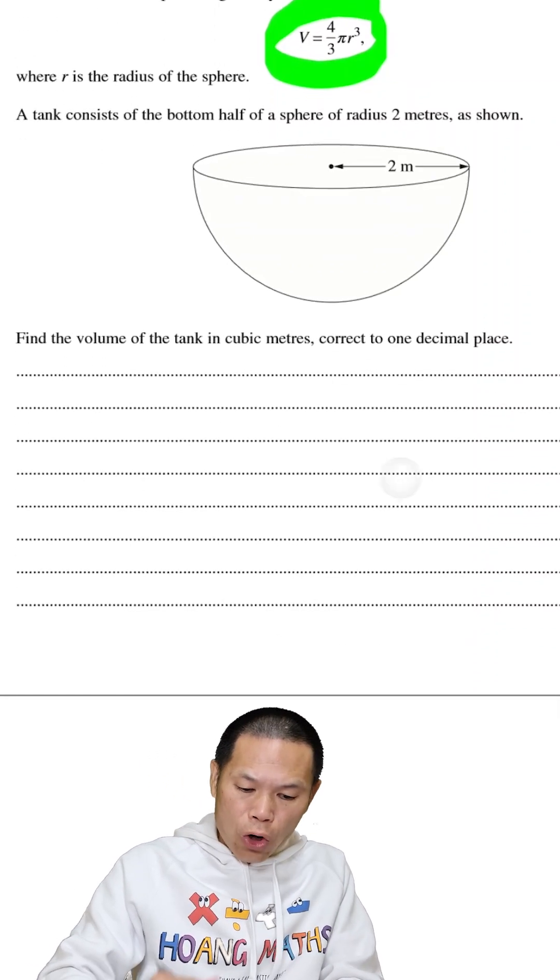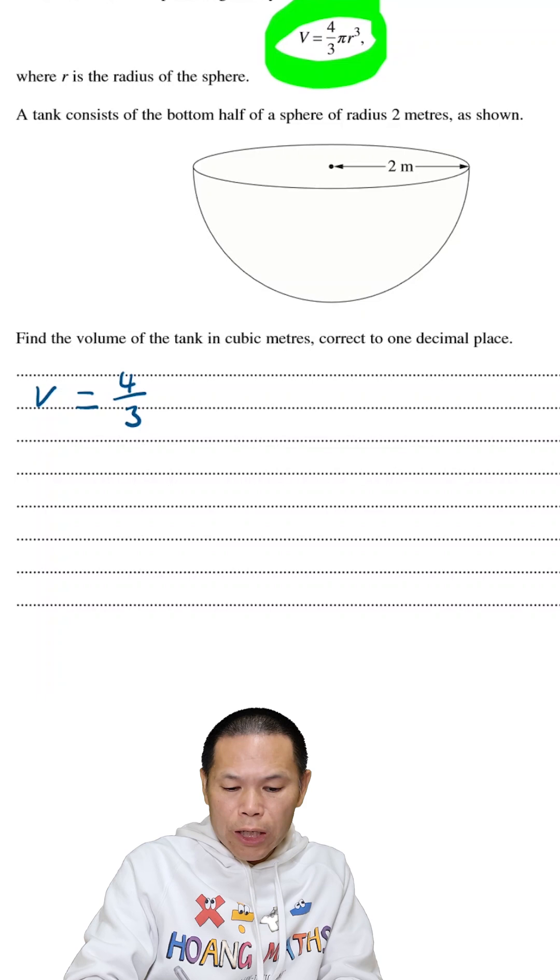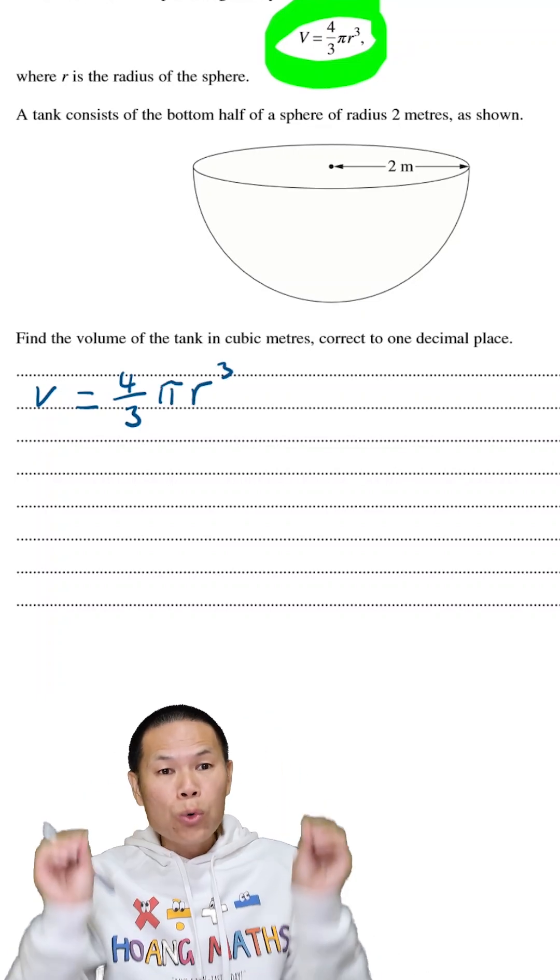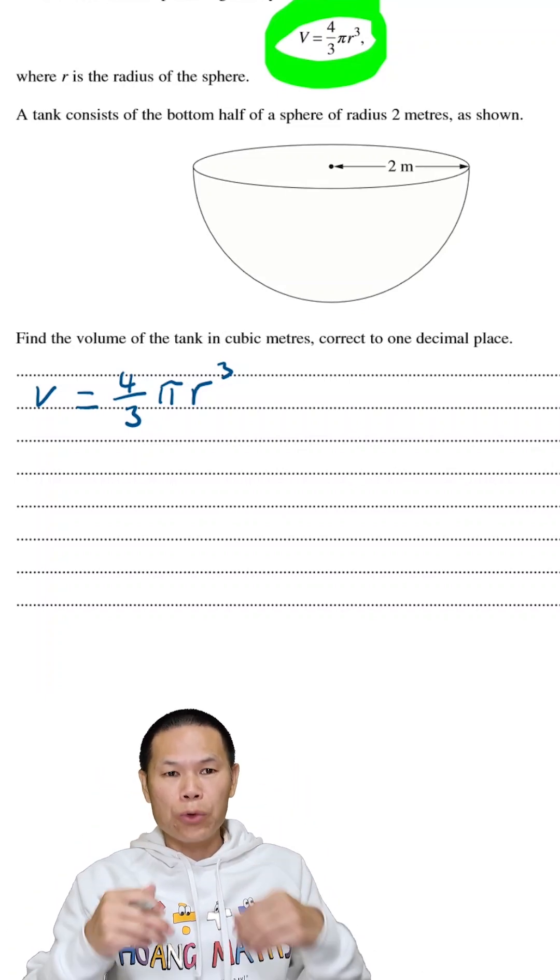The volume of a sphere is 4/3 π r³. Don't forget this is for the whole sphere. We only need to work out half of it, so we multiply by 1/2.